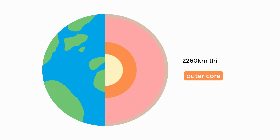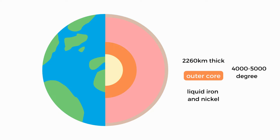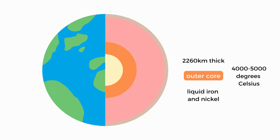Let's move on to our outer core, which is about 2,260 kilometres thick and made up of liquid iron and nickel. It reaches temperatures between 4,000 and 5,000 degrees Celsius. Because the outer core moves around the inner core, the Earth's magnetism is created.